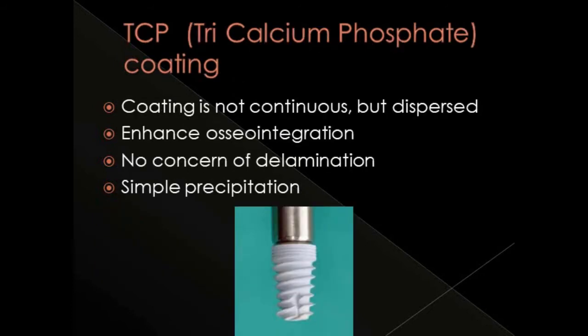Next is TCP or tricalcium phosphate coating. The main difference from hydroxyapatite coating is that the coating is not continuous but dispersed. Because of this dispersed coating there is no concern of delamination from the implant surface. The tricalcium phosphate particles also enhance osseointegration during the healing phase, and the main method of TCP coating is by simple precipitation.